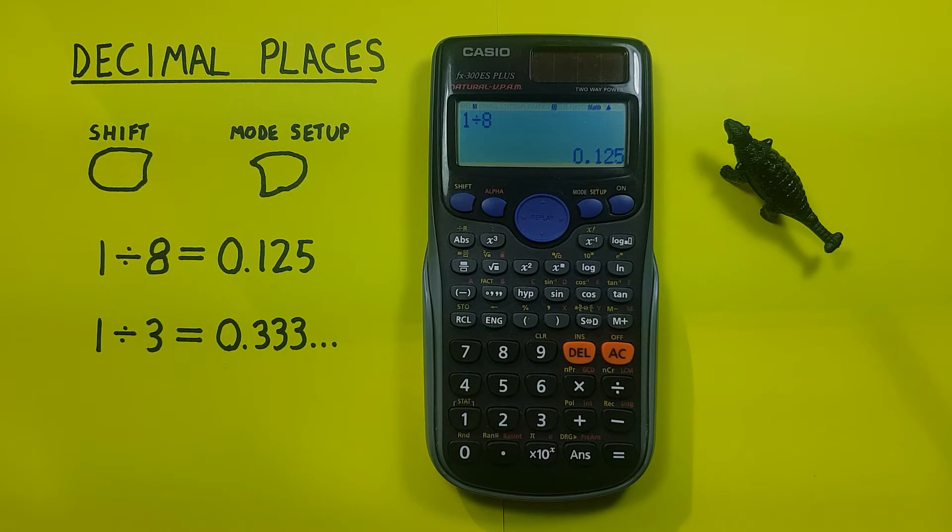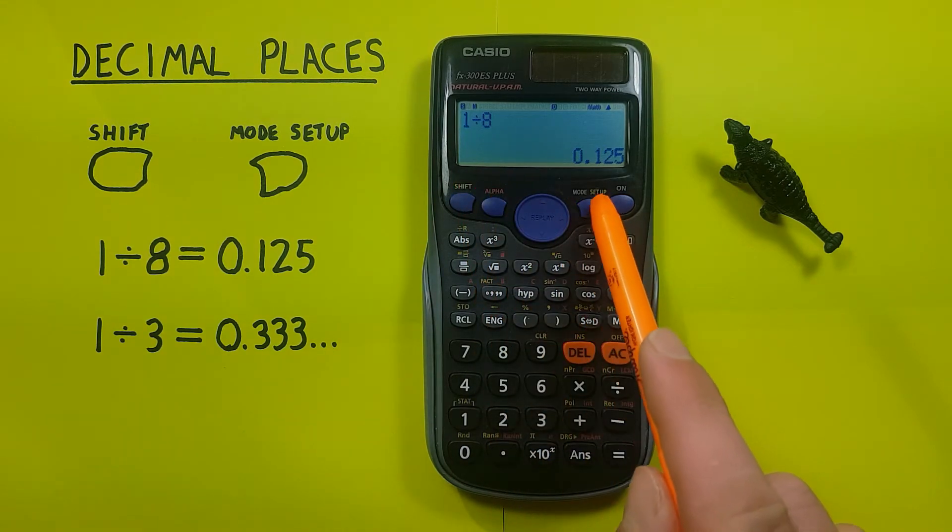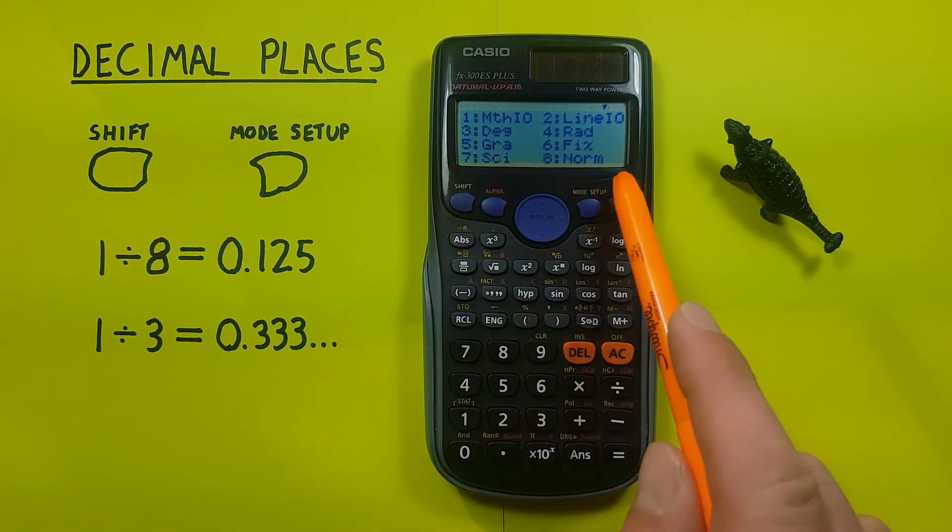But let's say we wanted to round this or only display, say, two decimal places. To do that we press shift then the mode key which brings us to this menu here.